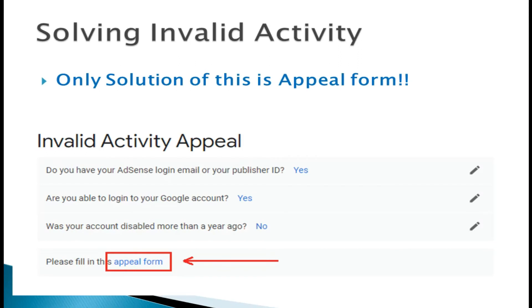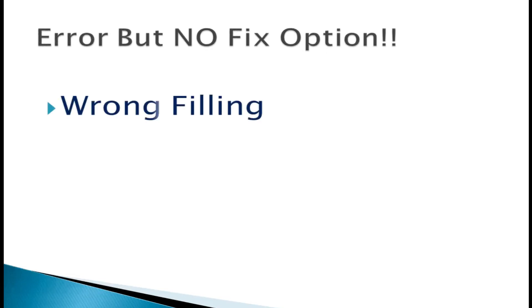I suggest not spending time on YouTube searching for any other solution, because there is no solution to invalid activity without filling the appeal form. Now let's move to the second error — the 'error but no fix option' case. If you applied for monetization and got stuck in Step 2 with no fix option, there are a few causes.